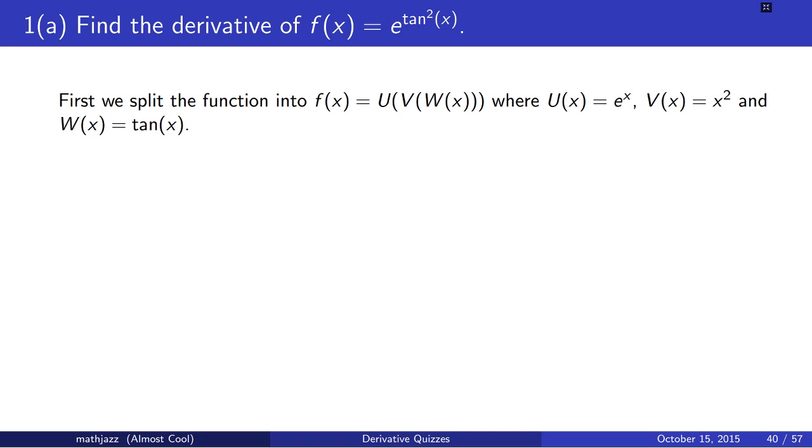So, f of x equals u of v of w of x, where u of x is e to the x, v of x is x squared, and w of x equals tangent of x.